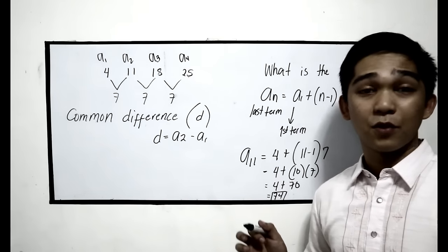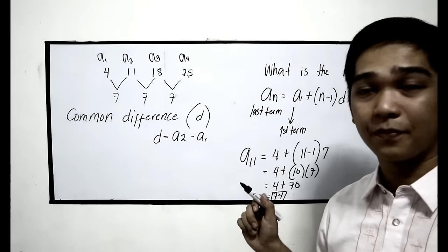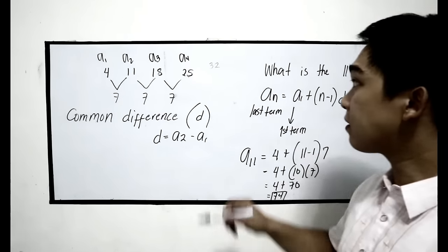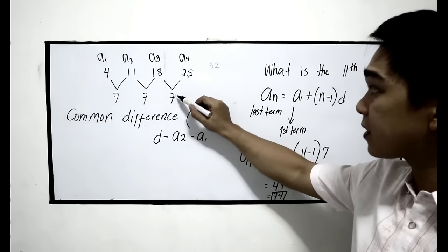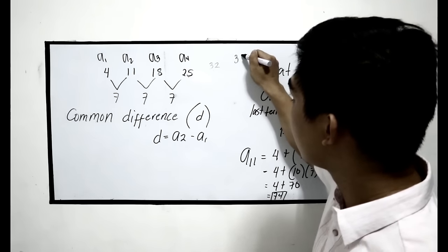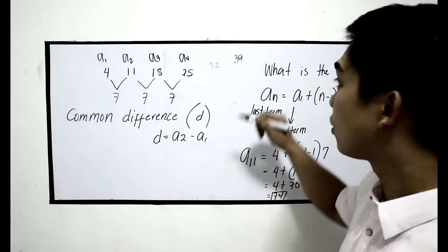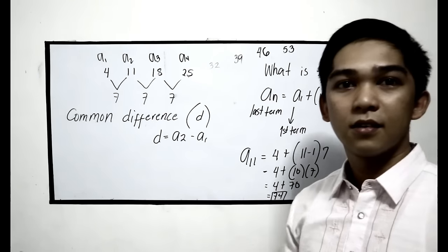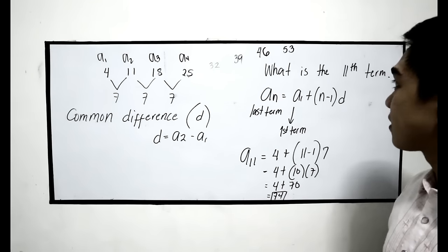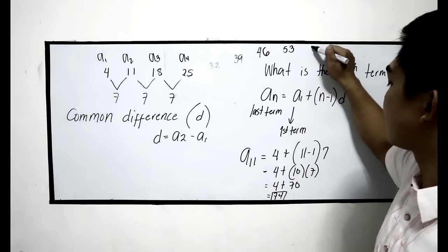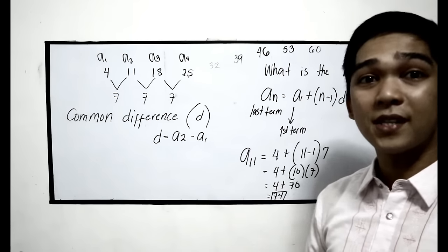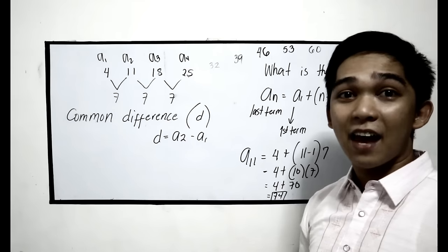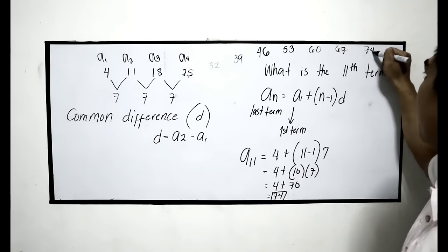You can check your answer manually by adding 7 to find the eleventh term. Starting from 25: 25 plus 7 is 32, plus 7 is 39, plus 7 is 46, plus 7 is 53, plus 7 is 60, plus 7 is 67, and 67 plus 7 is 74. That is our eleventh term, which is the same as our formula result.